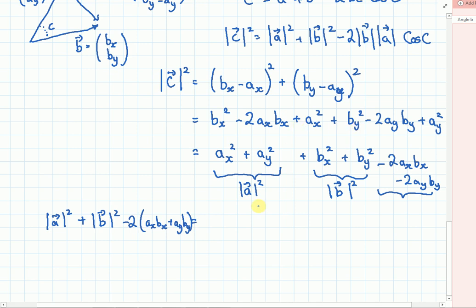And what we have over the right hand side is the A part plus the B part. So they cancel. And we get minus 2 times the modulus of B times the modulus of A times the cos of C.